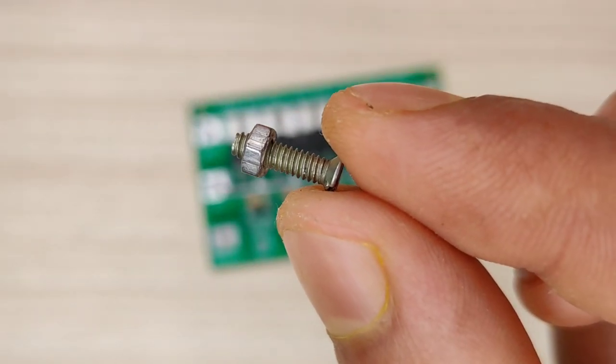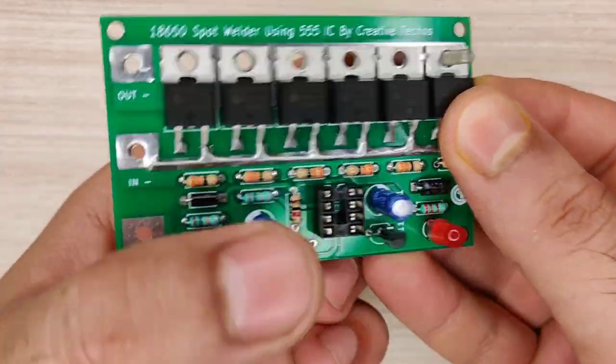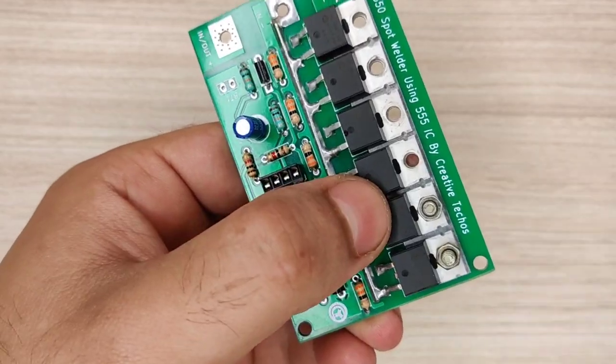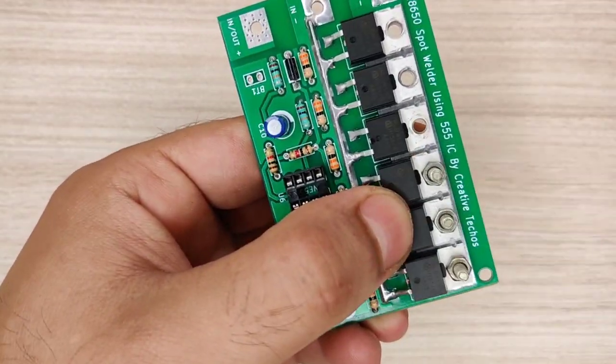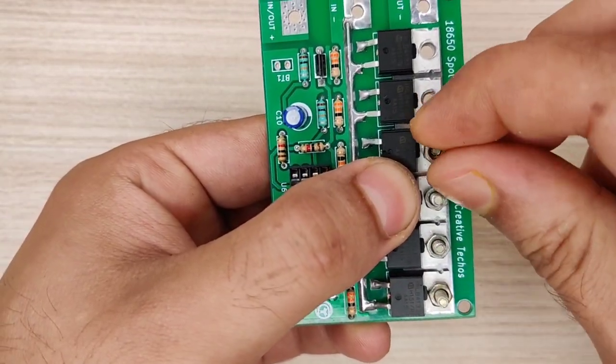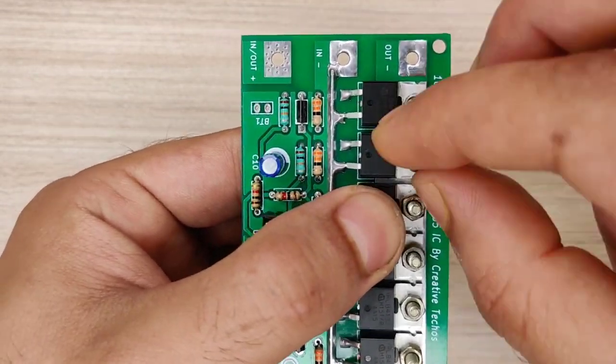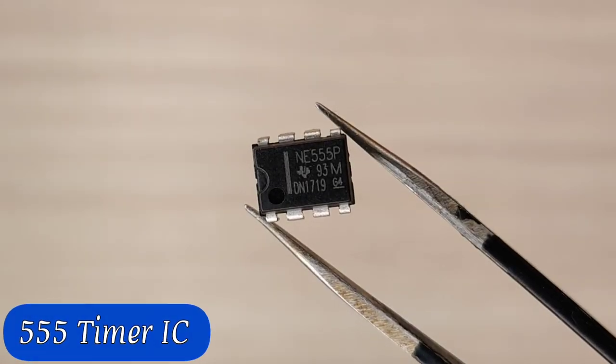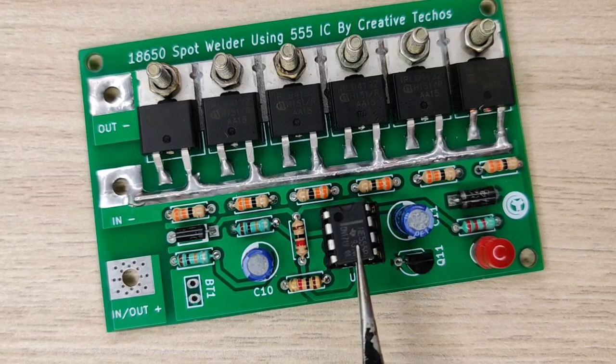You can use 3mm nut bolts to secure all the MOSFETs at its place. Now take a 555 timer IC and place it in IC base.